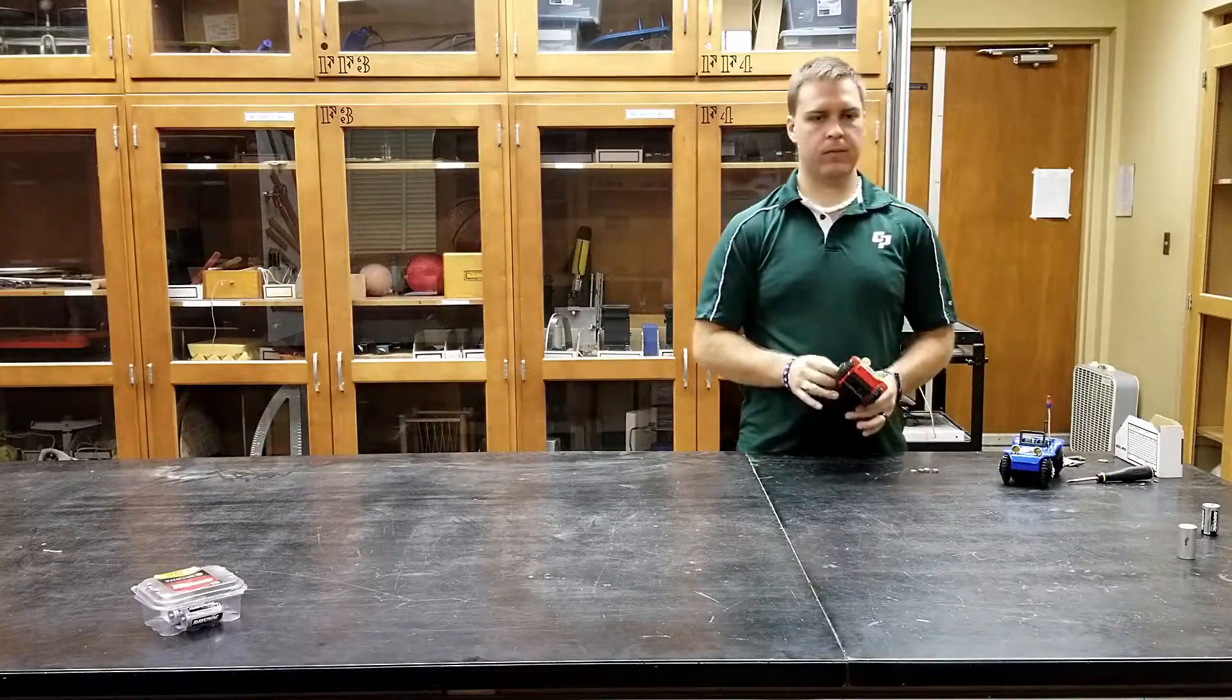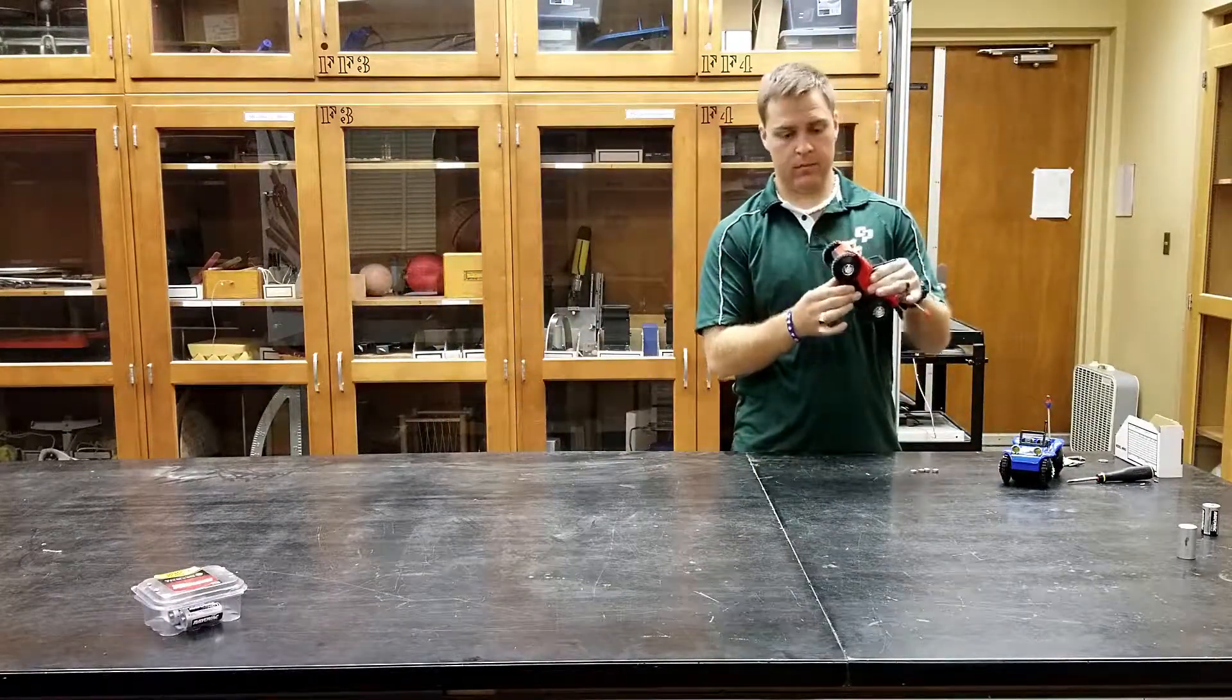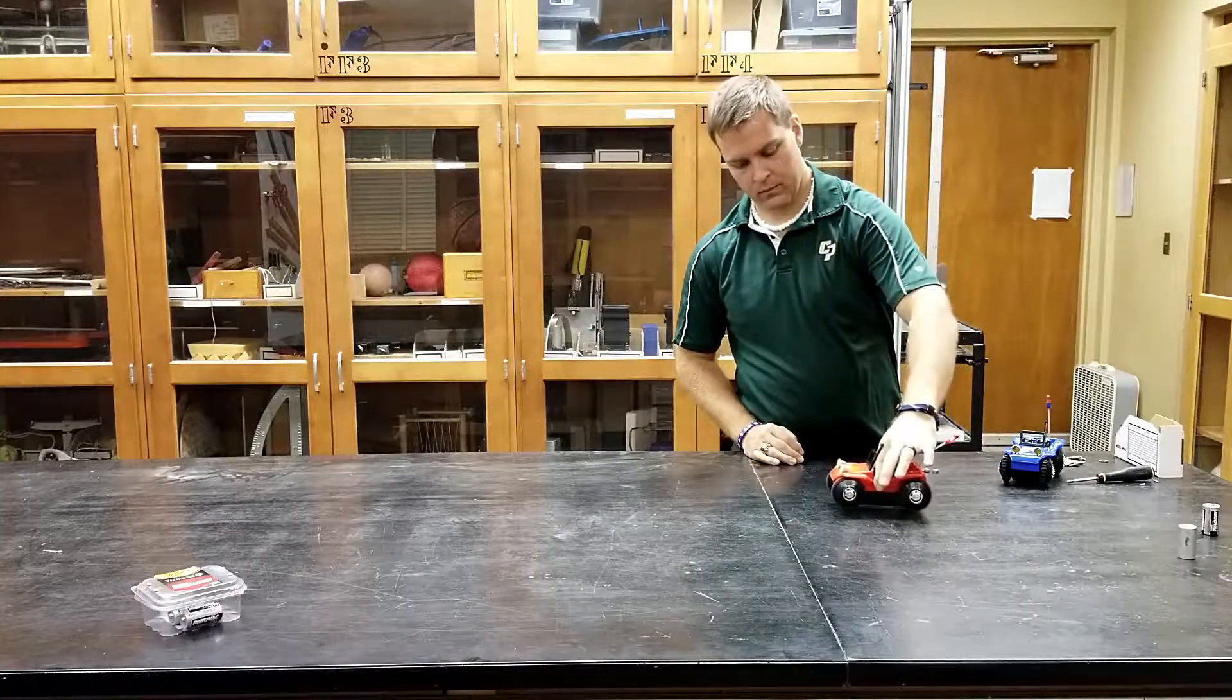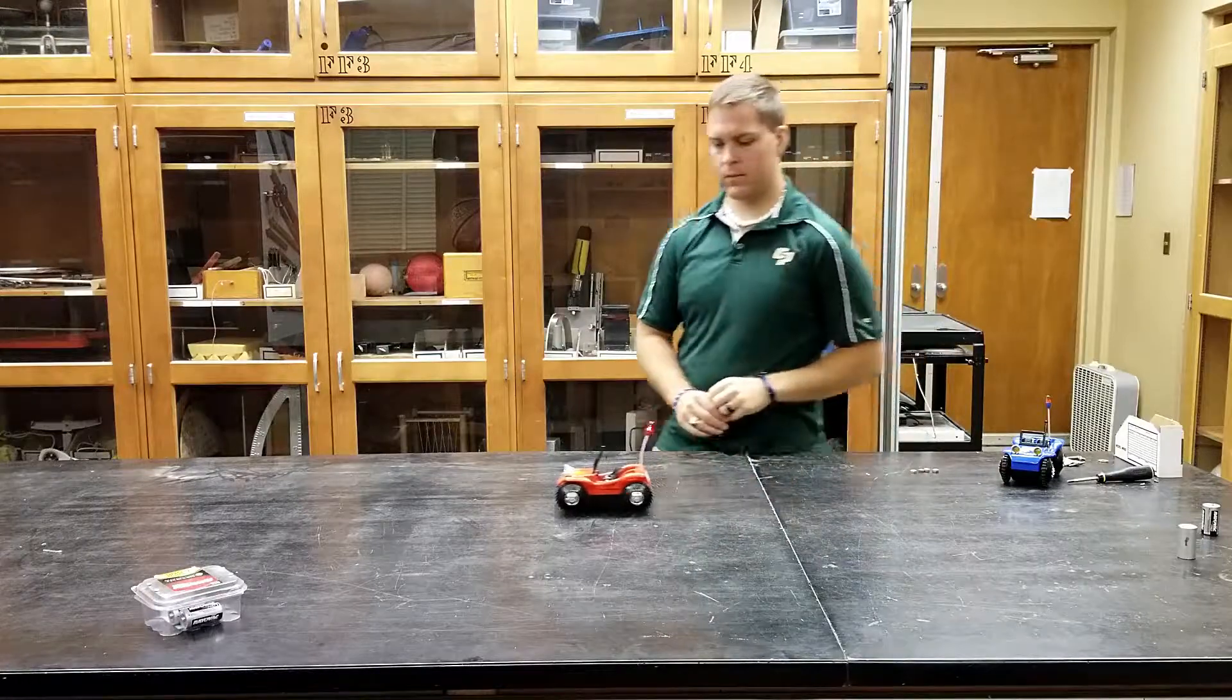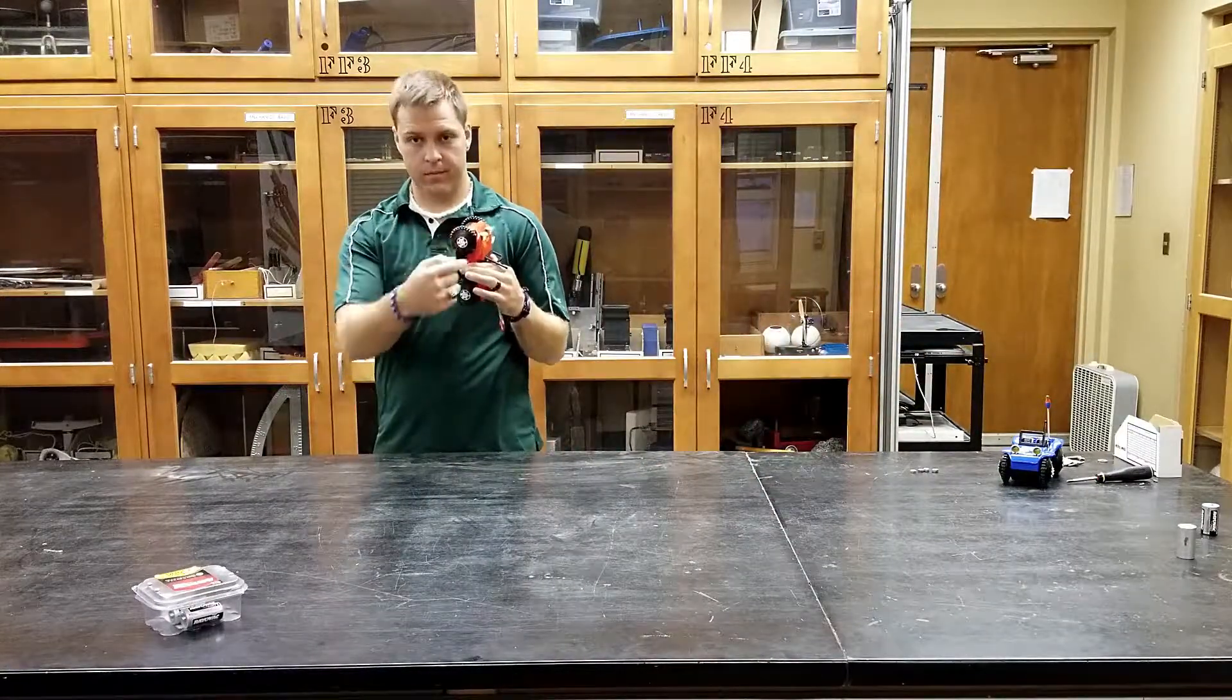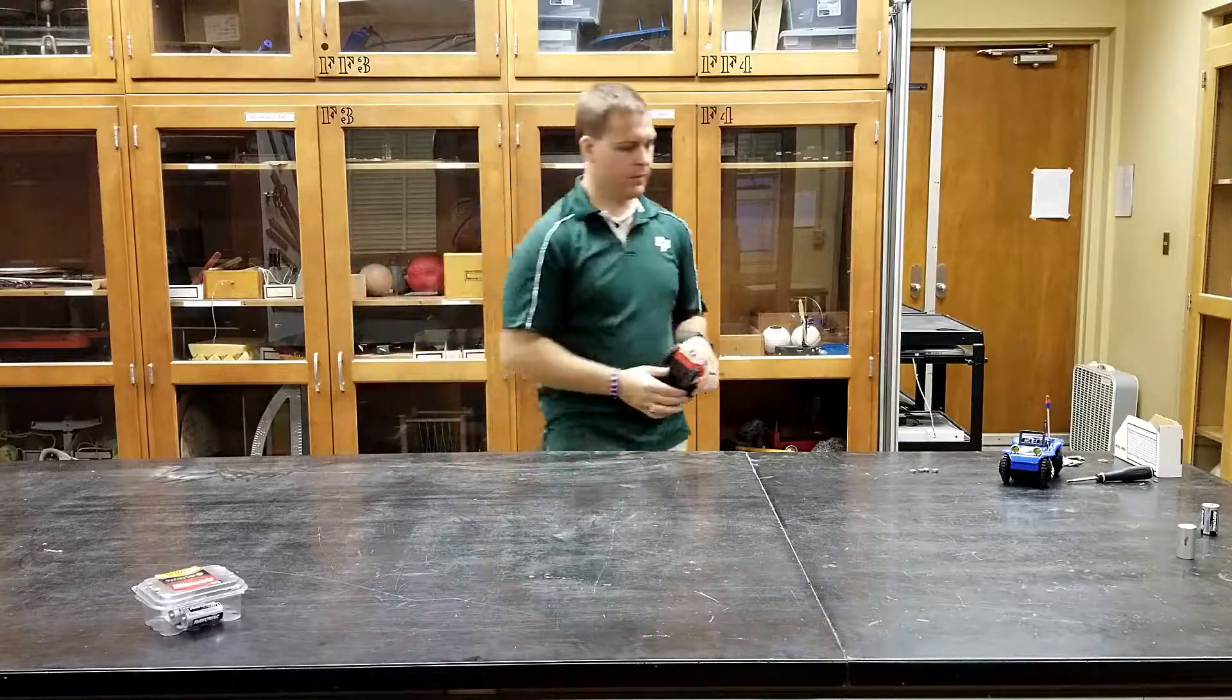One word of caution: make sure the wheels are allowed to spin at all times, otherwise you'll break the gearing. Turn it on while holding it slightly above the table, then let it go. When turning it off, pick it up off the table first before flipping the switch. That way the wheels move the entire time.